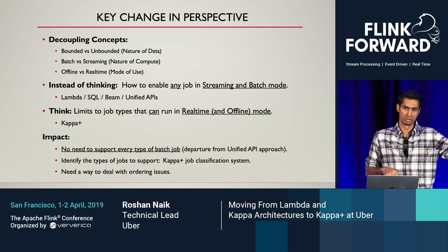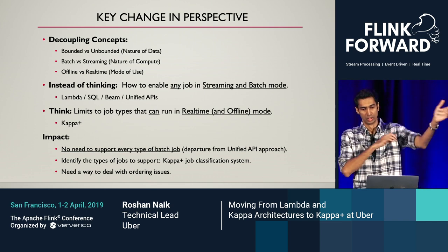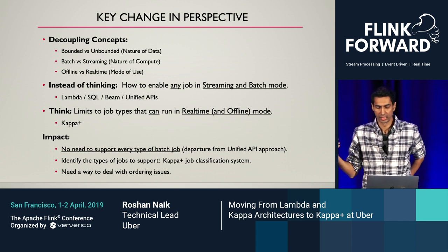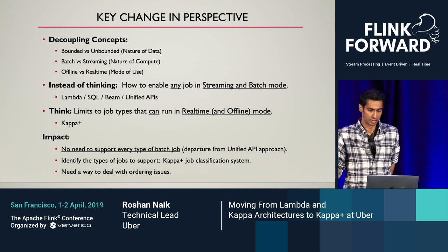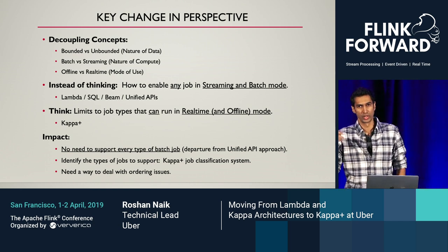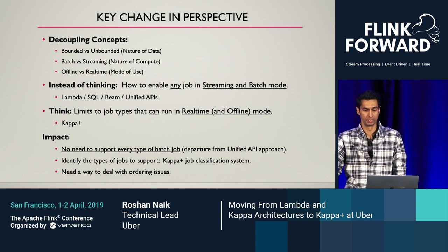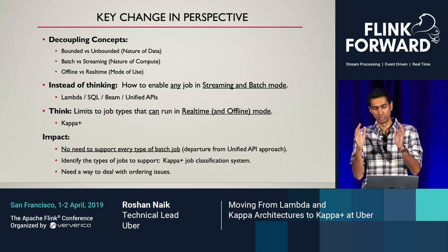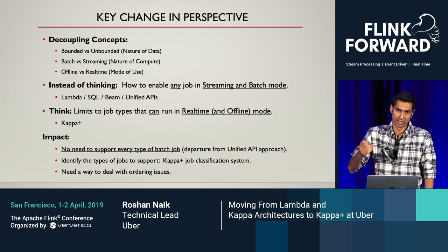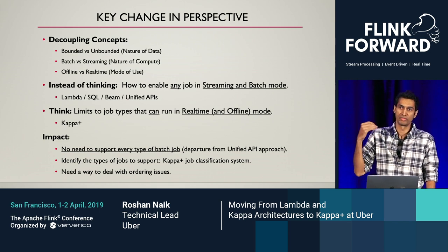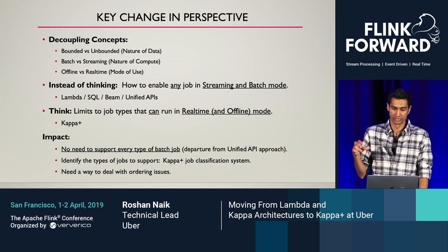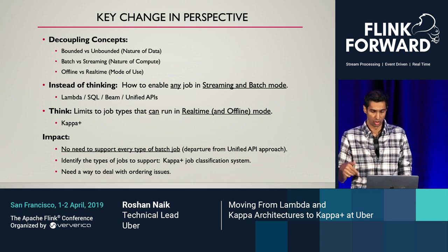Instead of thinking we want to enable any job to run in either batch or streaming mode, we switch it around and say: let's think about which jobs really need to be supported — only those which actually have a real-time footprint. That instantly eliminates a large class of jobs. You don't have jobs which sort the entire input data in real-time; joins are always within a window in the real-time world. This reduces the problem domain significantly, and we have a job classification system for that.